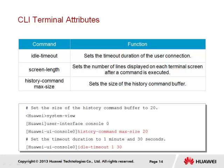From the command output at the bottom, we can see how the user console interface is accessed using the 'user-interface console 0' command. From this console view, we can assign the history command — in this case we've specified that we want to increase the history command max size to 20. In addition to that, we can also specify an idle timeout, specifying a duration of 1 minute and 30 seconds.